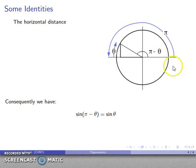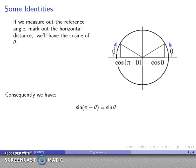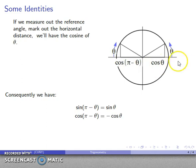Likewise, if I consider the horizontal distance: at angle pi minus theta, the horizontal distance corresponds to cosine of pi minus theta. If I just walk the reference angle theta, the horizontal distance is cosine of theta. Geometrically, these lengths are equal, but because one is a negative x-coordinate and the other is a positive x-coordinate, they have opposite signs. So cosine of pi minus theta equals the negative of cosine of theta.